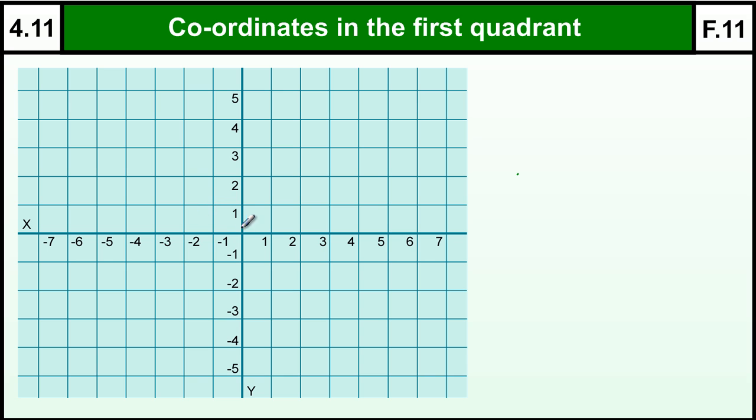Coordinates in the first quadrant. Here I have some graph paper with all the quadrants on it, but we're looking at the first quadrant, which is this section here. A graph is split up into four quadrants: the first, second, third, and fourth. In the middle we have (0,0), which is referred to as the origin.